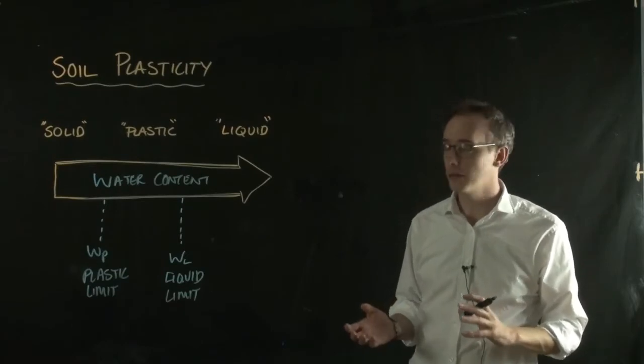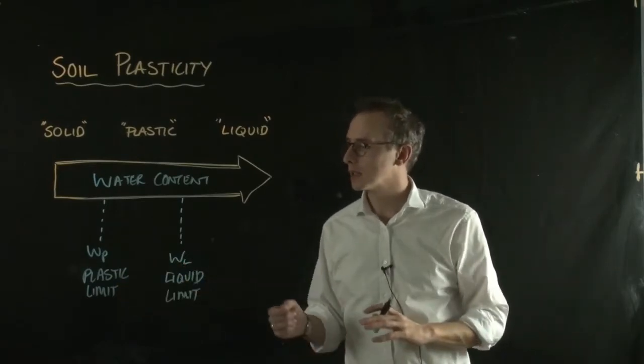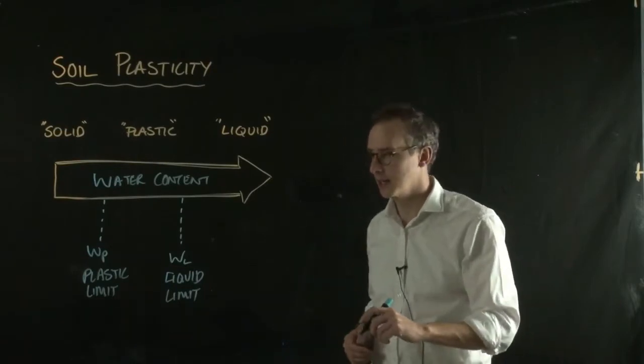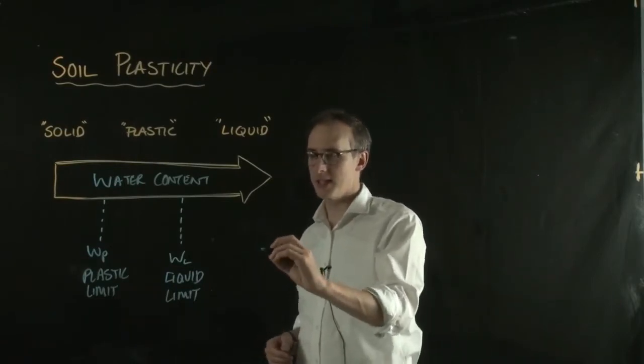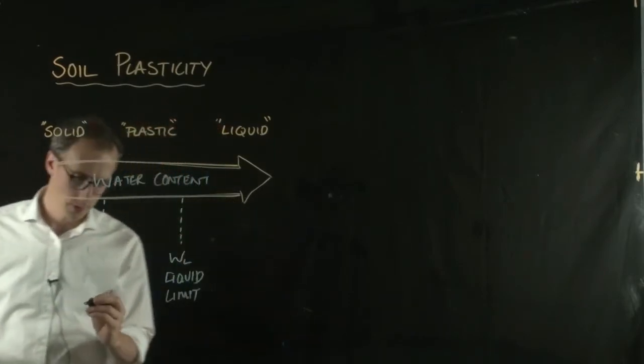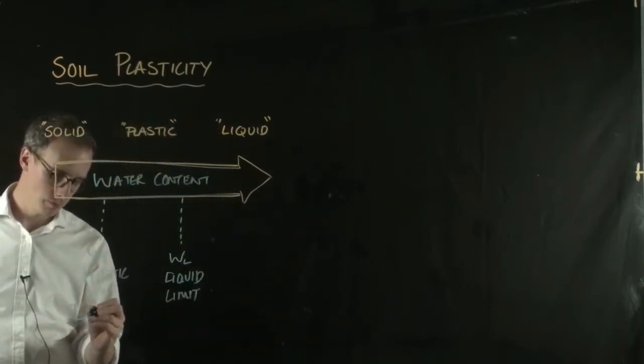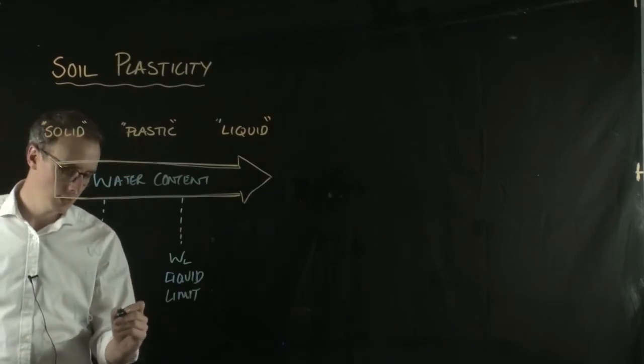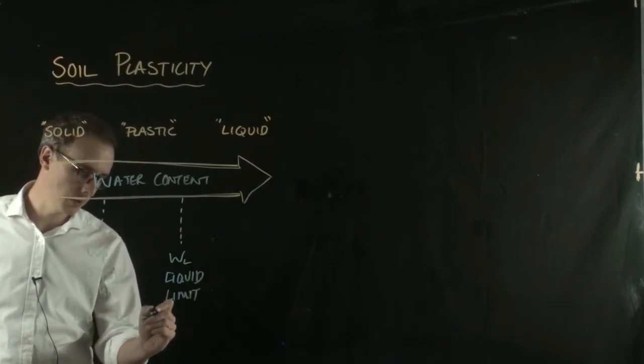So we can define the range at which soils behave plastic through something called the plasticity index. Now the plasticity index, I'll write it down here, is equal to, so plasticity index is IP here, is equal to the liquid limit minus the plastic limit.